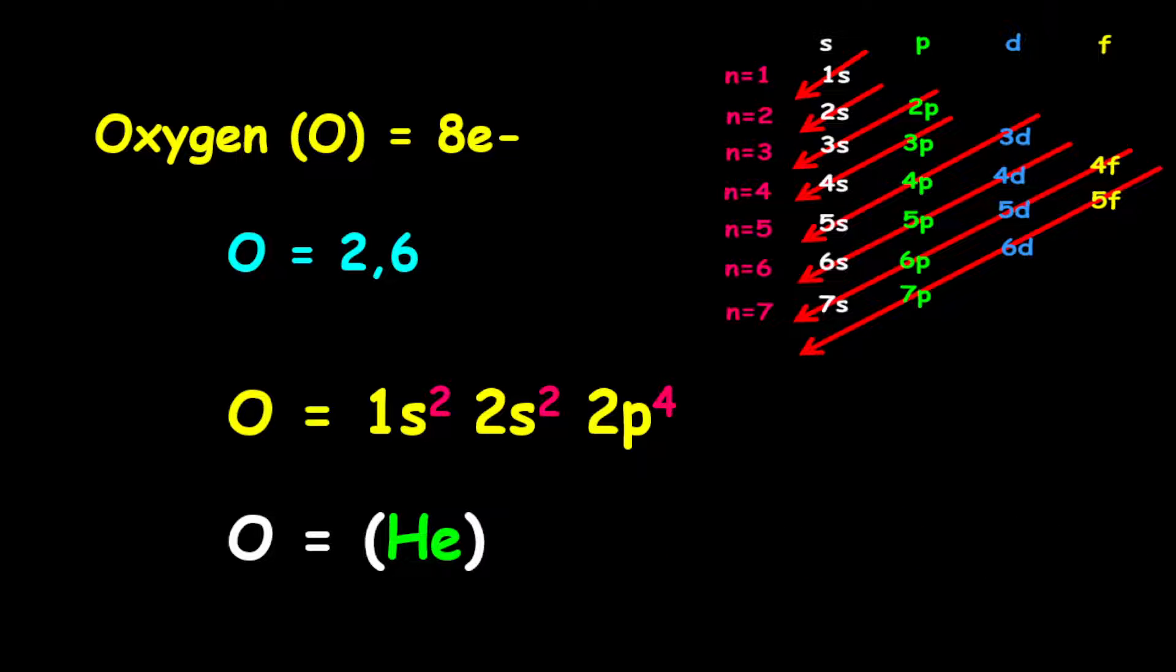For the shorthand electron configuration, it is given as helium, representing the 1s2, followed by 2s2, then 2p4.